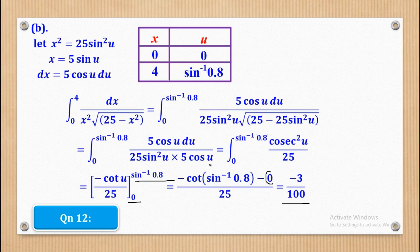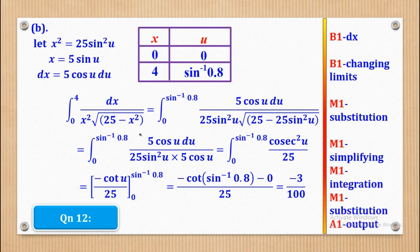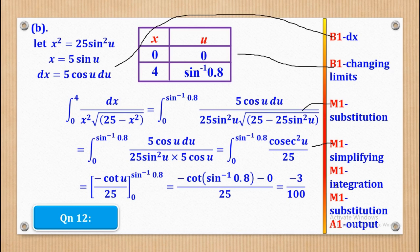That's what they wanted in this part. Now let's see how marks can be awarded. The first mark is for differentiating to get dx. The second mark is for changing the limits using the table. The third mark is for substitution, the next for simplifying, and another for integrating. The final two marks are for substituting the limits and getting the correct output. That's how the 7 marks come about.